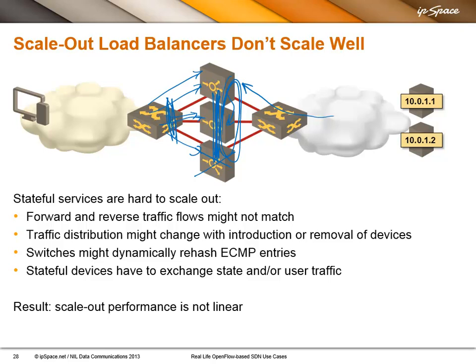I think I've seen some numbers that even with two boxes, you get only 70% of twice the throughput in some cases with some vendors. Remember that the performance is not linear — if you have four boxes, you will not get four times the performance.